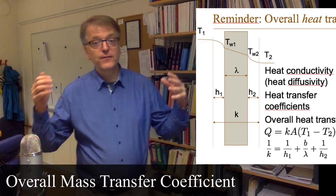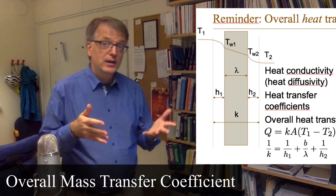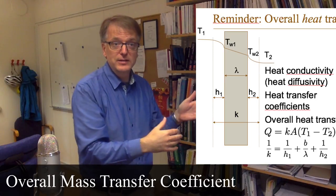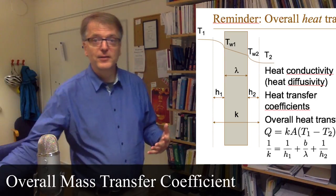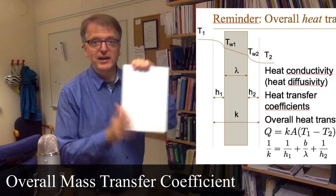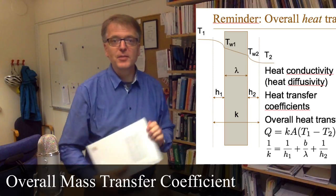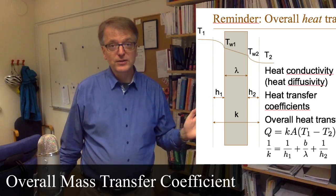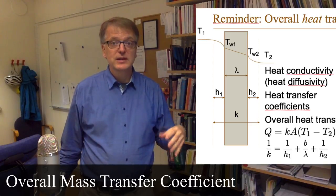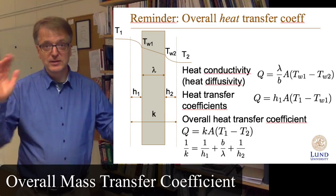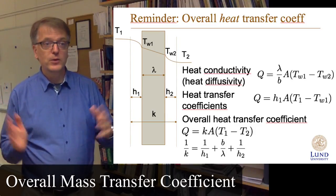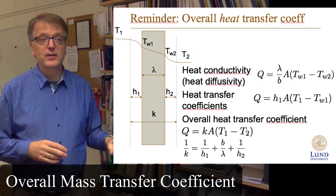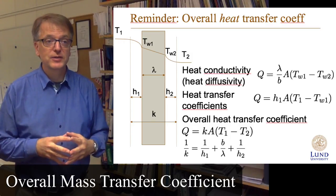If you assume steady state, you can say that the same heat is being transported through all these layers. And if we have a nice situation where the area stays the same, for heat transfer we have Q equals H times A times the temperature difference. For heat conductivity, we instead have the conductivity divided by the thickness times the area and the temperature difference.